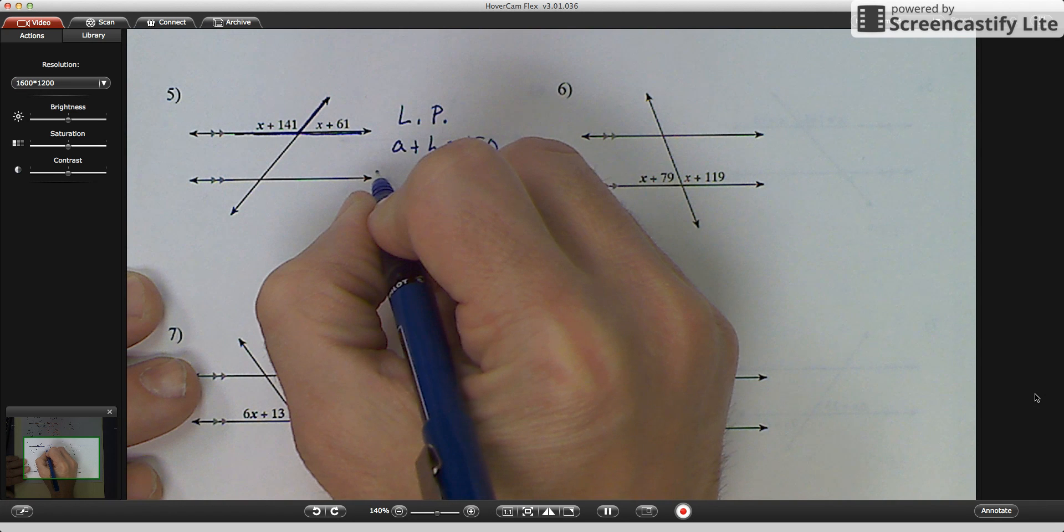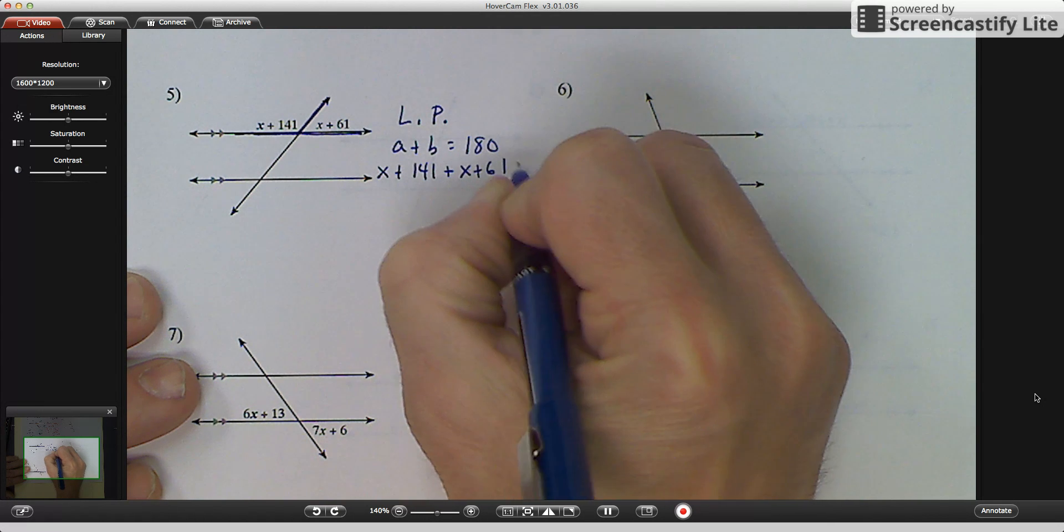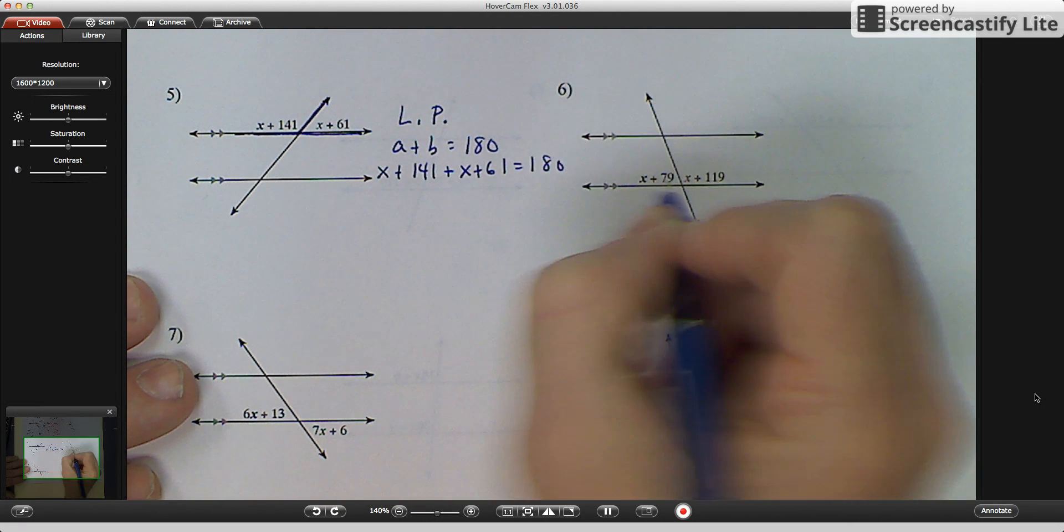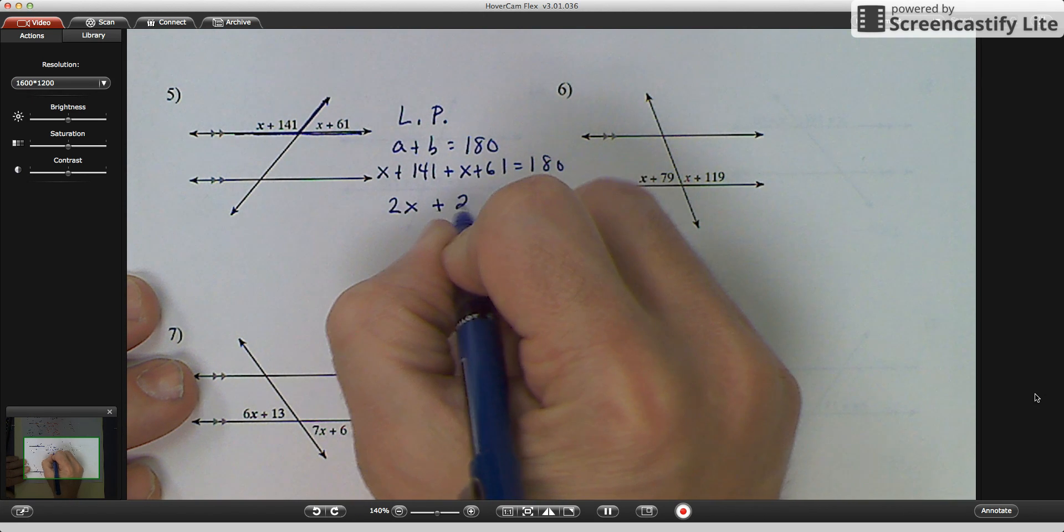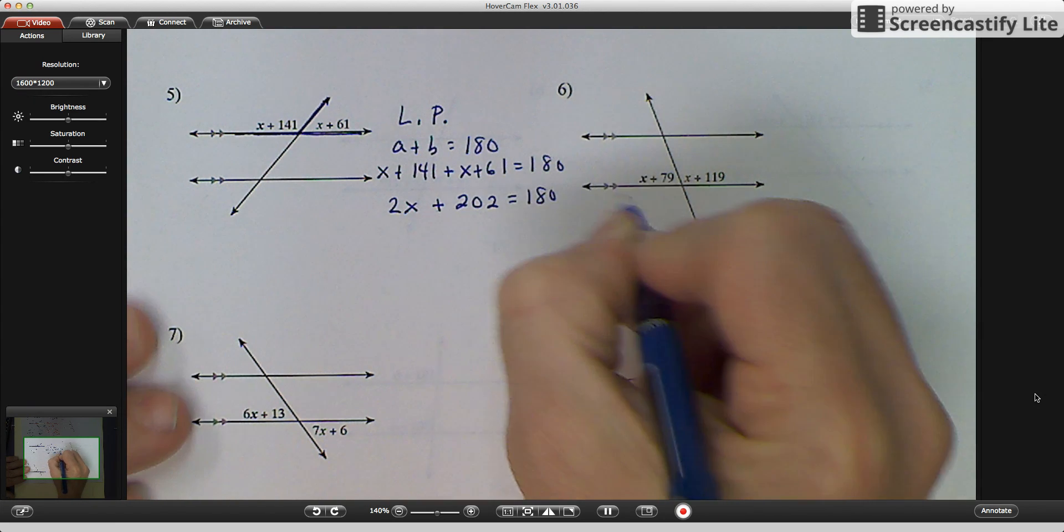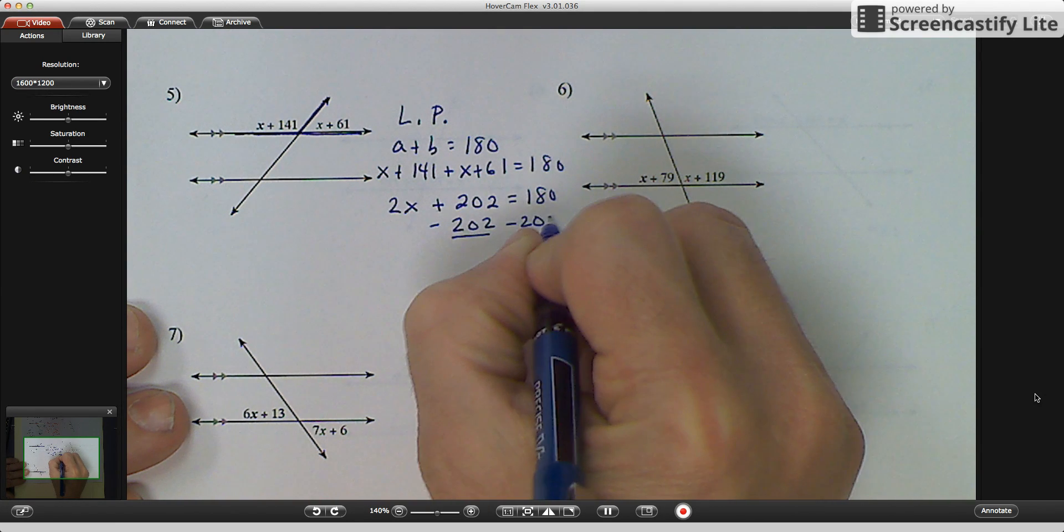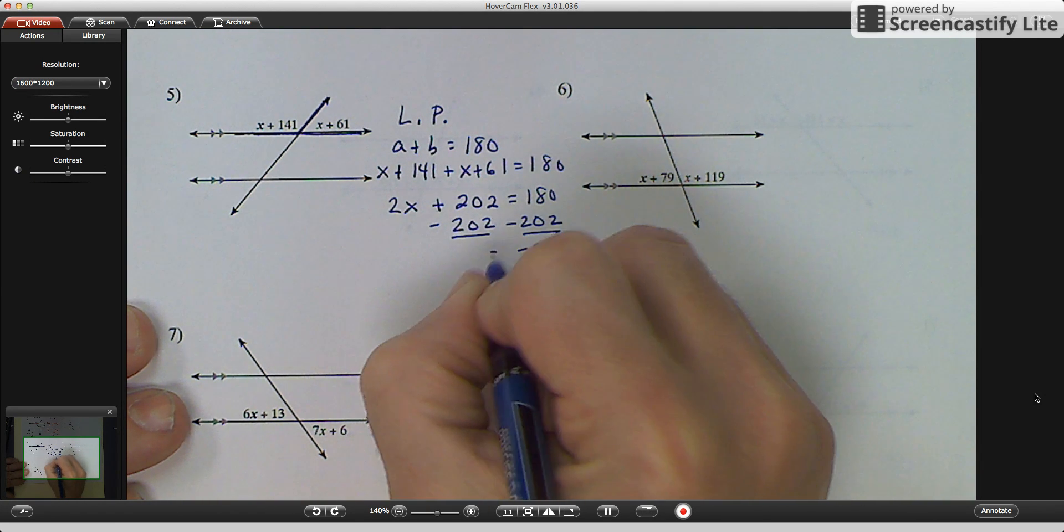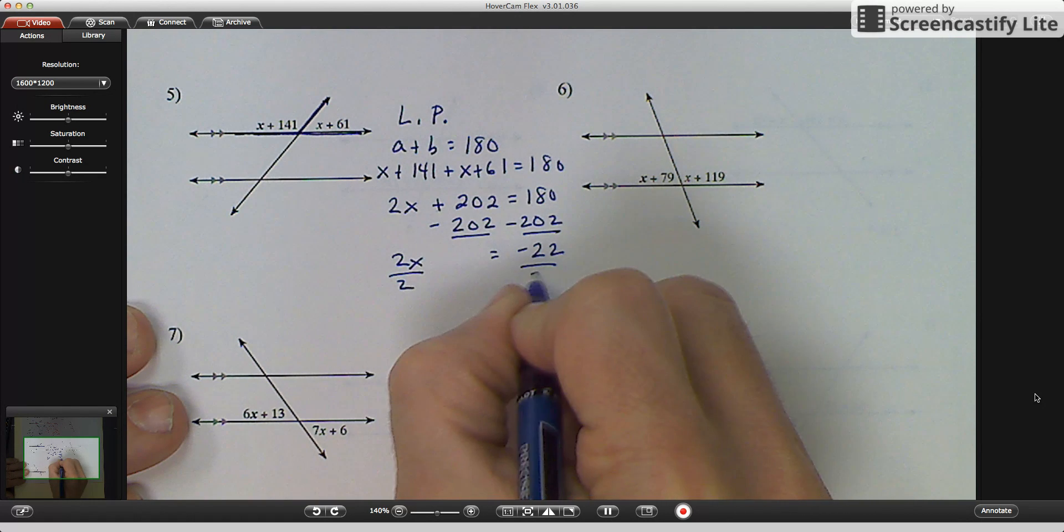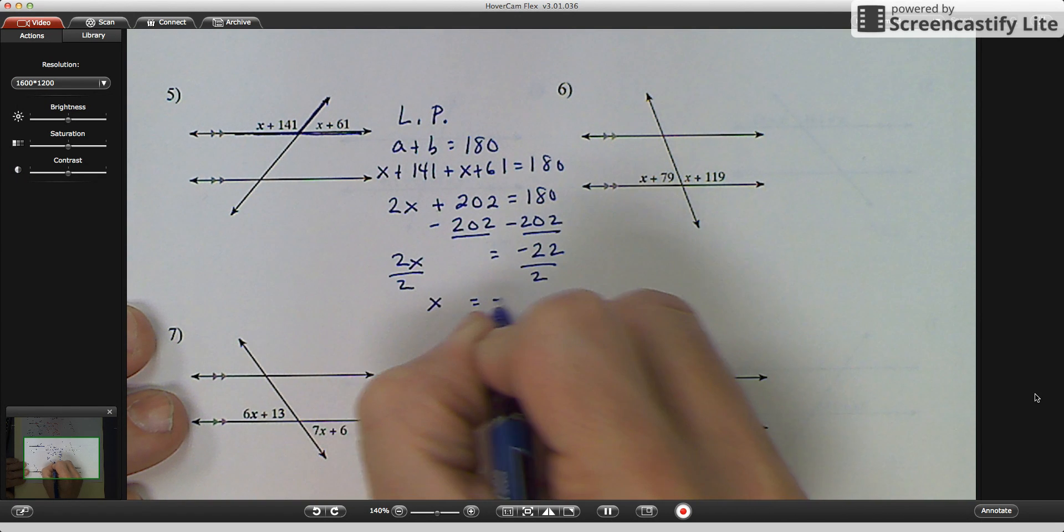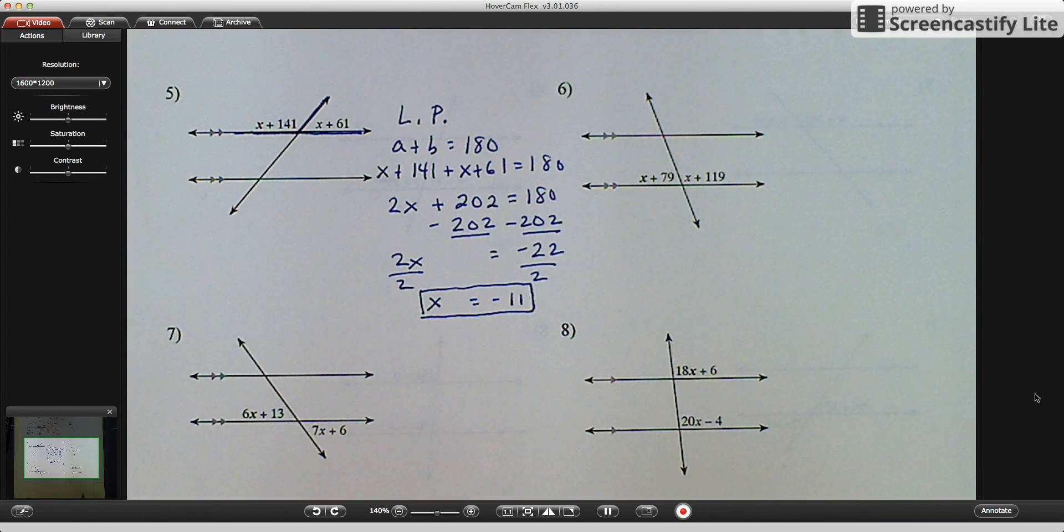So then angle A is x plus 141. And angle B would be x plus 61 equals 180. Then I add them. x plus x is 2x. 141 plus 61 would be 202 equals 180. And then I subtract 202 from both sides. And I get negative 22. I'm going to then divide by 2. And you get x equals negative 11.